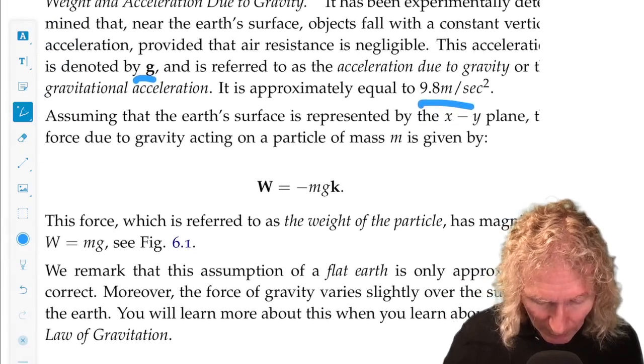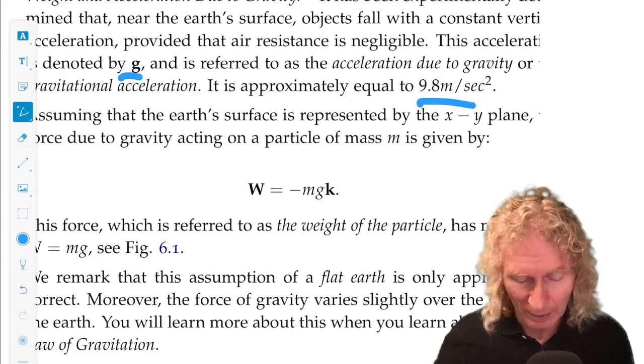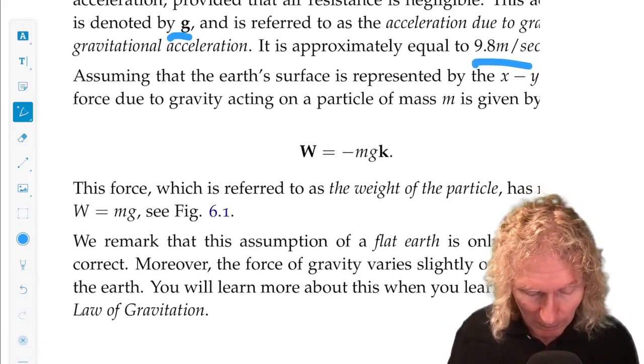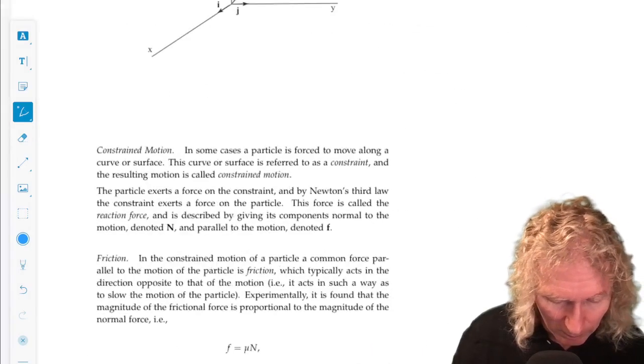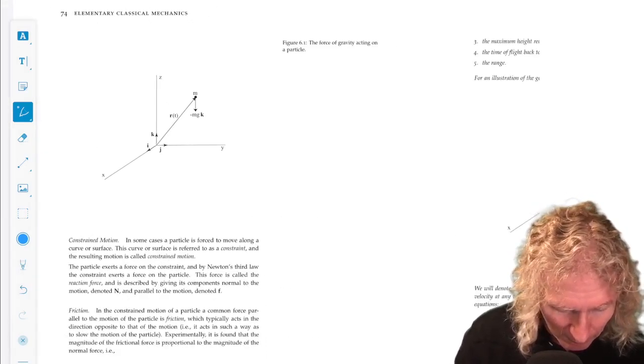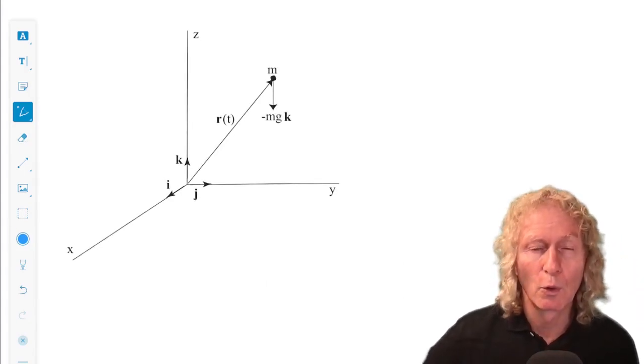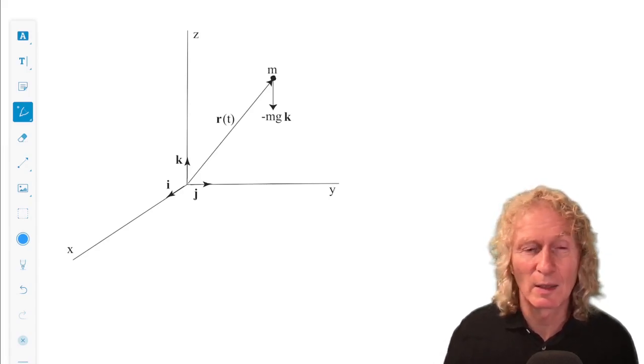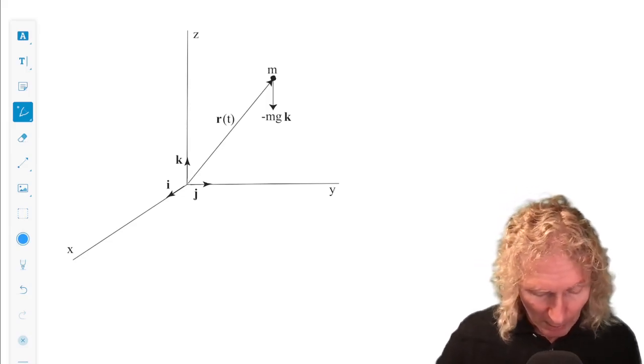And so the weight of a particle is the acceleration of gravity acting on the mass. Minus mgk, that's weight as a vector, and its magnitude will just be mg. And so that's the picture we have in mind for gravity acting on a particle. And that's going to come up in a lot of the problems we look at in this chapter.